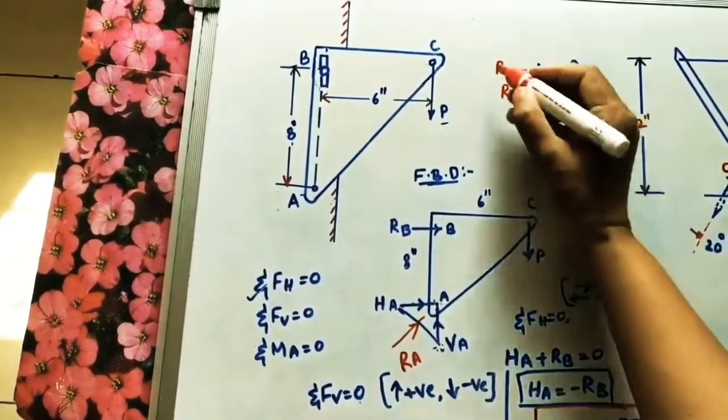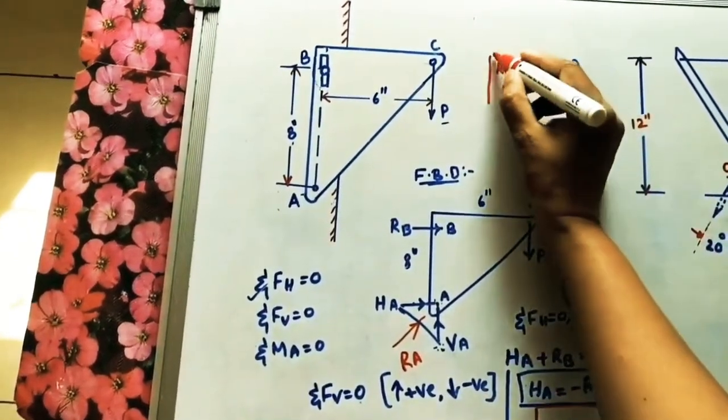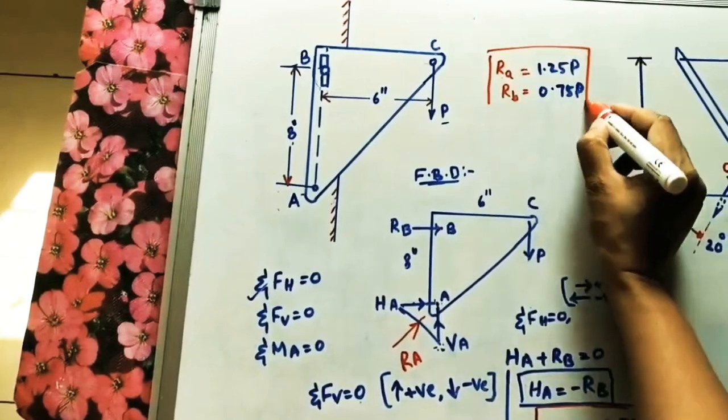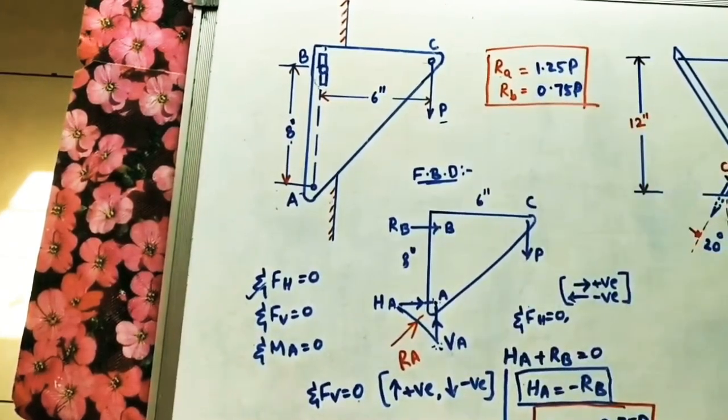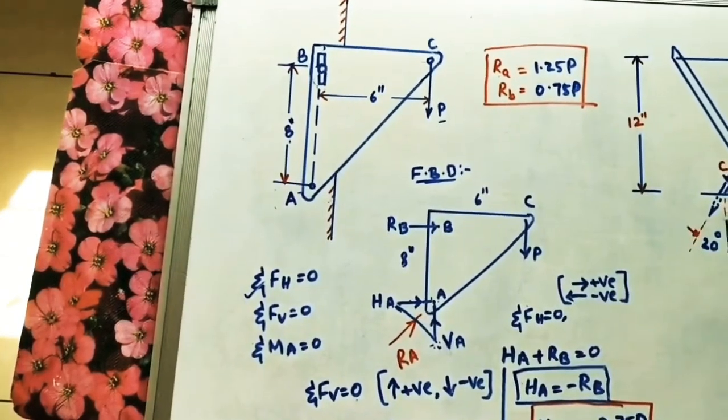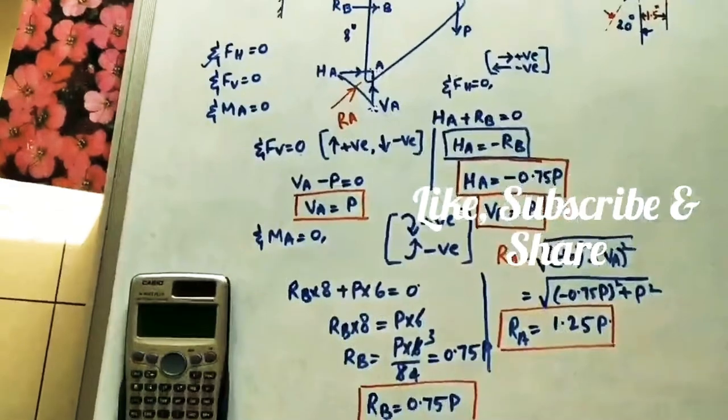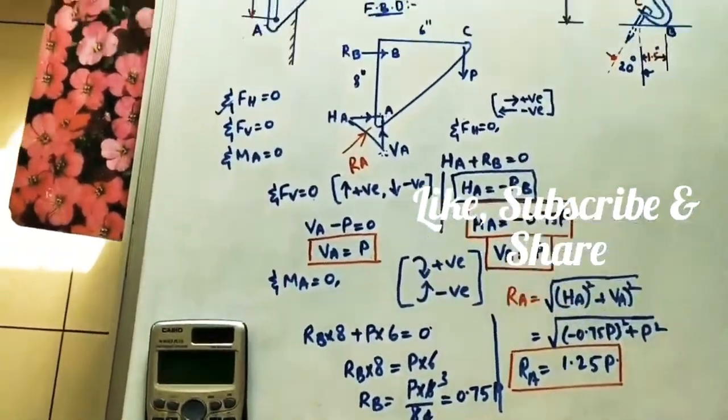So the final answers are: RA equals 1.25P and RB equals 0.75P. These are the reactions at support points A and B respectively. That completes the solution for this problem.